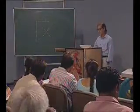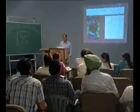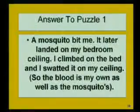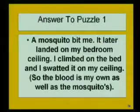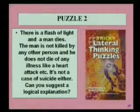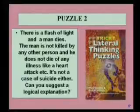There are some creative thinking quizzes. Quiz 1: you see a mosquito and a bit of blood on your ceiling. Whose blood is it? You may say it is the mosquito's blood, but it will actually be a bit of yours — because the mosquito has taken your blood. Quiz 2: there is a flash of light and a man dies. The man is not killed by another person, does not die of illness or heart attack, and it is not suicide. Can you suggest a logical explanation?